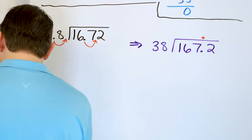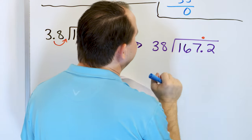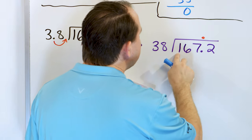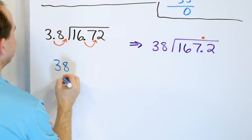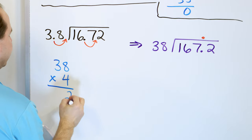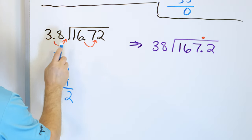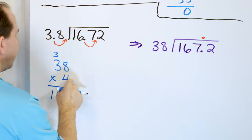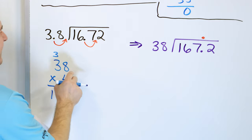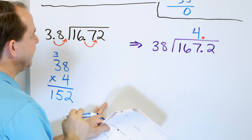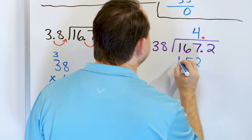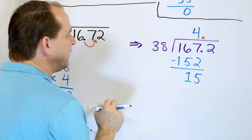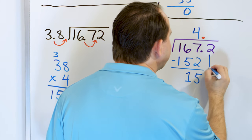38 goes into 1 — zero times, too small. 38 goes into 16 — doesn't go at all. So we consider 167. I'm not sure how many times it can go in, so let me go to the side and start multiplying. 38 times 4: 8 times 4 is 32, 3 times 4 is 12, carry 1 — 13. We get 152. 152 is as close as I can get to 167 — if I multiply by 5, I'll blow past it. So it goes 4 times. When I multiply, I get 152, and now I can subtract: 7 minus 2 is 5, 6 minus 5 is 1. Then I grab the next digit, which is a 2.